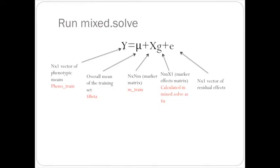The y value is the n by 1 vector of the phenotypic means, and this is the pheno_train matrix that we created in the slide before. The mu value is the overall mean of the training set, and this is output by the mix.solve as the dollar sign beta.